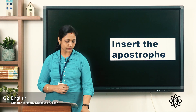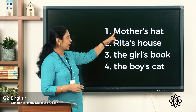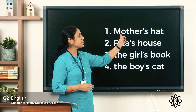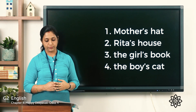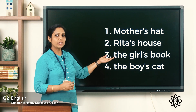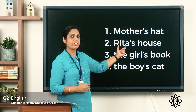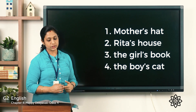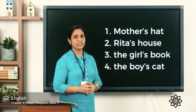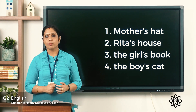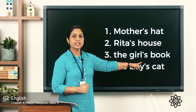Now let's insert the apostrophes. First: 'mother's hat' — insert the apostrophe between r and s. Second: 'Rita's house' — insert the apostrophe between a and s. Third: 'the girl's book' — insert the apostrophe near 'girl.' Fourth: 'the boy's cat' — after y, insert the apostrophe before s.